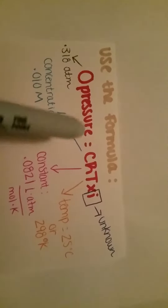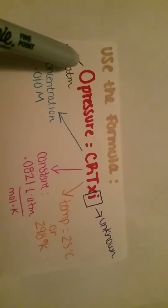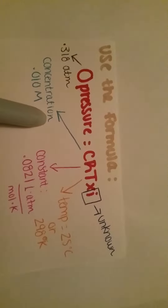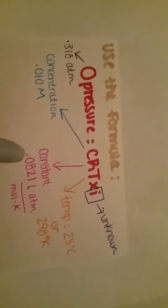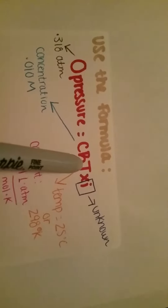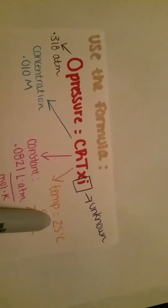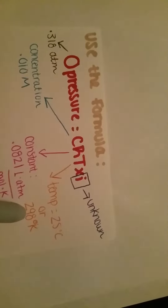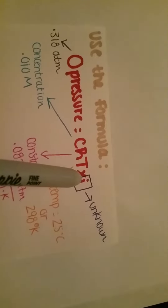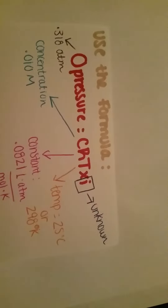Our osmotic pressure is given as 0.318 atmospheres. Our concentration is also given as 0.010 molar. Our constant R is always 0.0821, and our temperature is given as 25 degrees Celsius. To convert to Kelvin, we add 273, giving us 298 degrees Kelvin. Our I remains the unknown — there is no value for that.